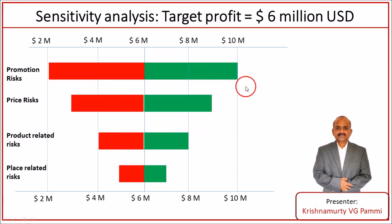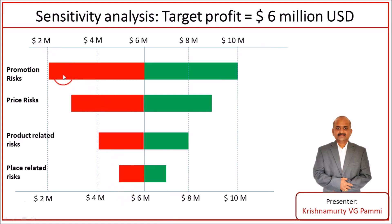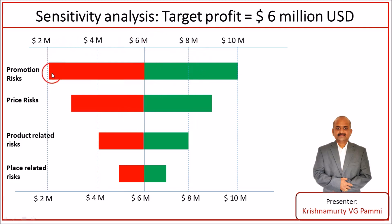This tornado diagram has horizontal bars representing the risks under study, and these horizontal bars are represented in a decreasing pattern like a funnel. The top most sensitive risk is shown at the top, and in the decreasing order of their sensitivity, these risks are listed as horizontal bars. From this particular diagram, we know that out of the marketing related risks, promotion risks and price related risks are impacting our project objectives the most.